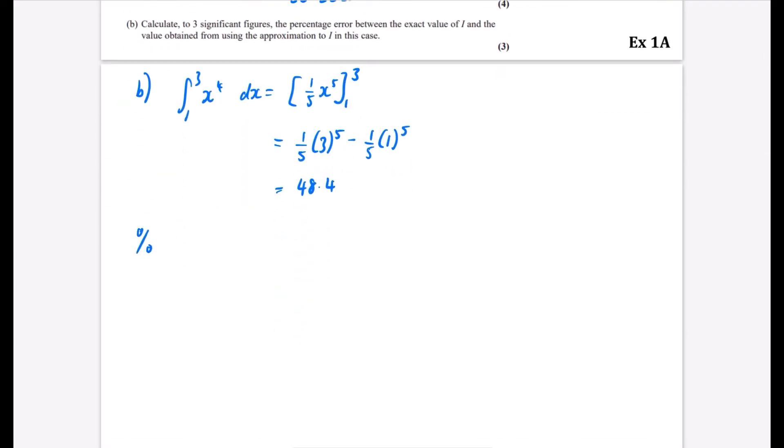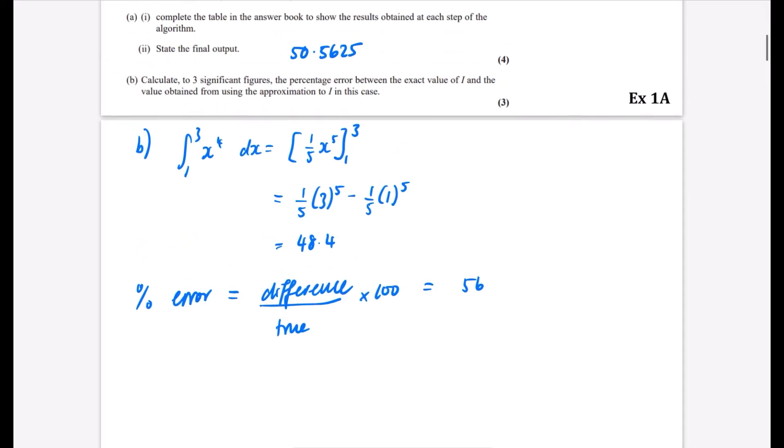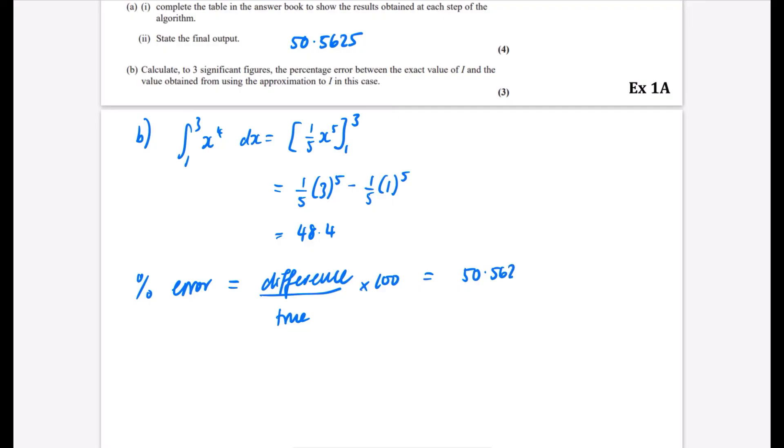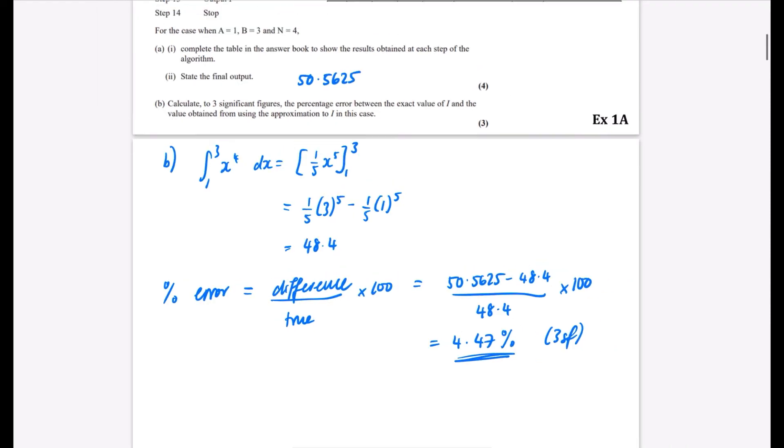The percentage error is the difference between them divided by the true value multiplied by 100. So it's 50.5625 minus 48.4, divided by 48.4, times 100. That gives 4.47% to three significant figures. Our answer was a 4.47% overestimate.